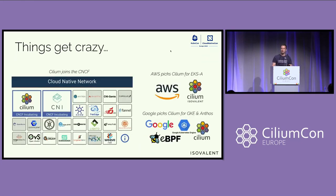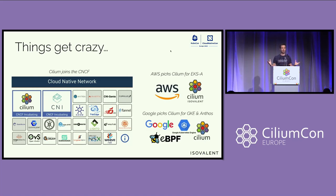Then things got crazy. Cilium joined the CNCF. AWS picked Cilium for EKS-A, and Google picked Cilium for Anthos and GKE. This is when we realized — this is actually becoming real, becoming big. We may have created something that actually works.